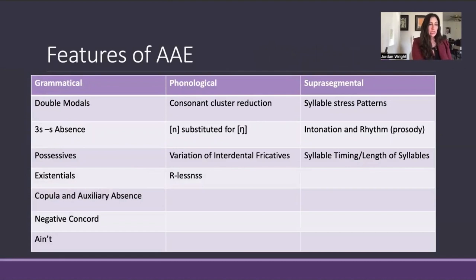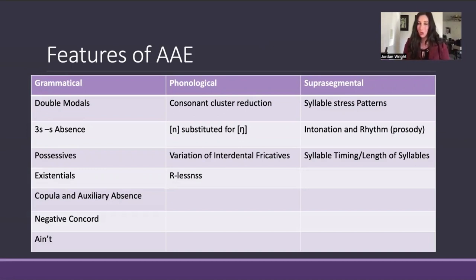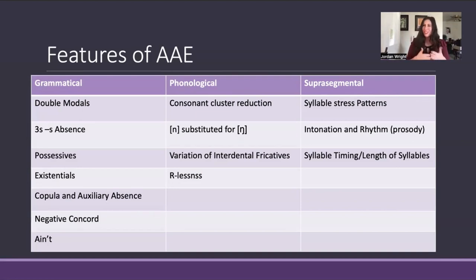Some features of AAE include double modals such as 'might could' or 'might ought to,' the absence of the third person singular marker (he runs, she walks, he goes), possessives and the absence of possessive suffixes, existentials, copula and auxiliary absence, negative concord or double negatives, and the use of a first-person negative marker like 'ain't.' Phonological considerations include consonant cluster reduction, the substitution of 'n' for the '-ing' sound, variation of interdental fricatives, r-lessness, and suprasegmental features such as stress patterns, intonation and rhythm, and syllable timing. These constitute the rules and features of AAE, though they vary by region, across history, and generationally.